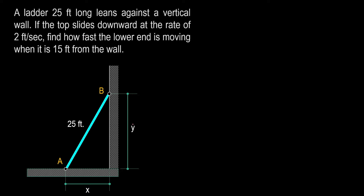As point B moves, point A will also move, so the distance X is also a variable. What is being asked in the problem is actually the rate of change of X with respect to time. So to solve this problem, the first step is always to find the equation that relates whatever is required by the problem. We are required to solve for the rate of change of X with respect to time, so the two variables are X and Y and we need to find the equation that relates them.